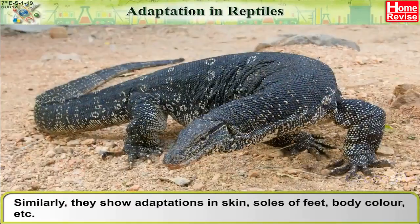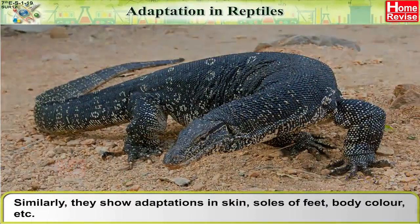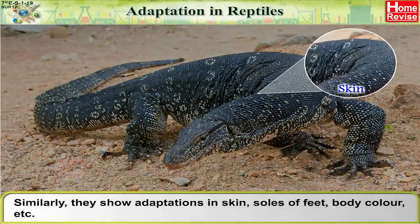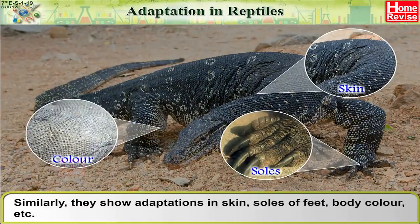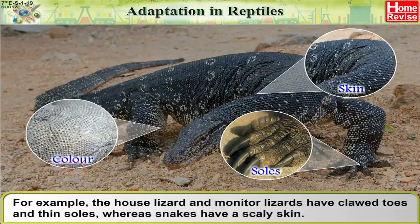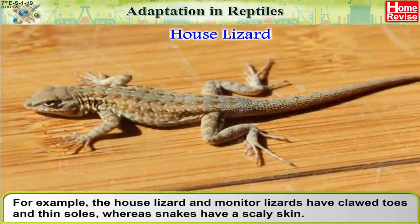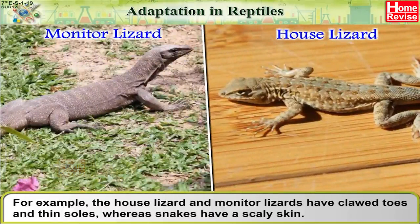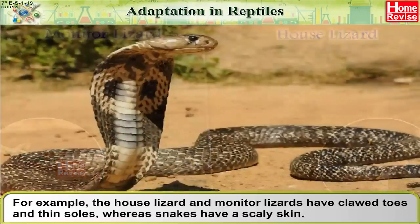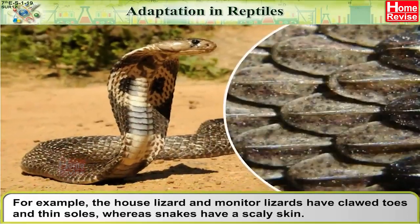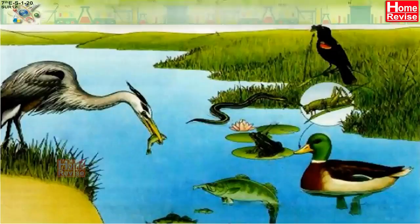Similarly, reptiles show adaptations in skin, soles of feet, body colour, etc. For example, the house lizard and monitor lizard have clawed toes and thin soles, whereas snakes have a scaly skin.